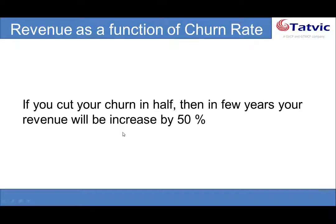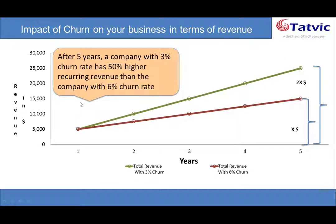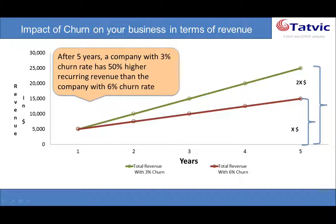Interesting fact. Can you elaborate on this maybe with an example? Sure. The graph depicted in this slide shows the impact of churn on overall revenue. Assume that there are two businesses, one having a 3% churn rate and the other a 6% churn rate month over month. If we compare the revenue trajectories between both businesses, it is evident that the company with the lower churn rate would emerge as a winner. The business with a 3% churn rate has 50% higher recurring revenue than the company with a 6% churn rate. And as the company grows, this effect becomes even more significant.